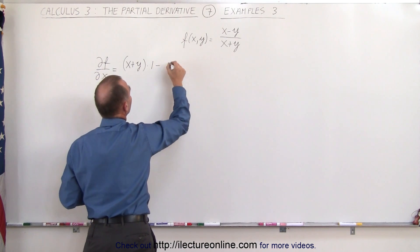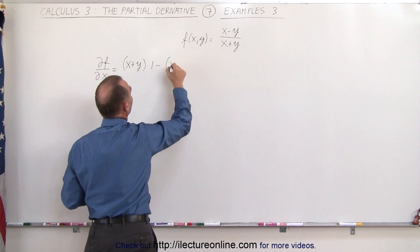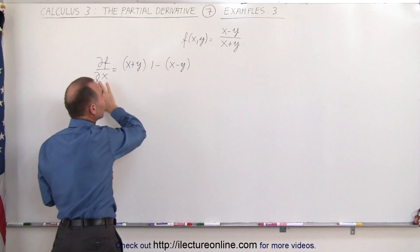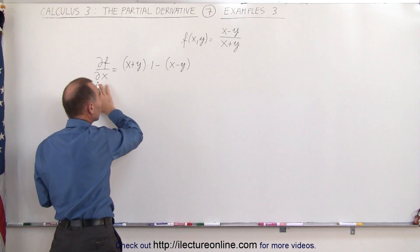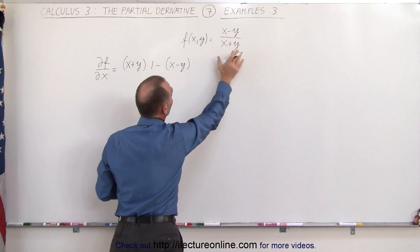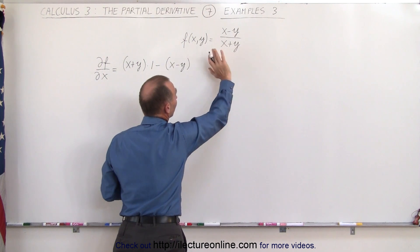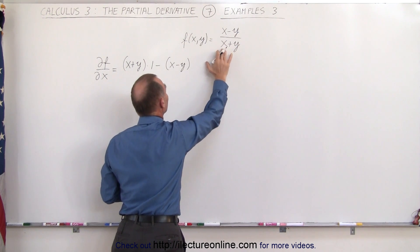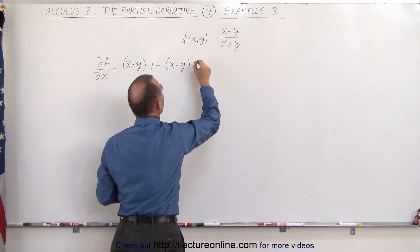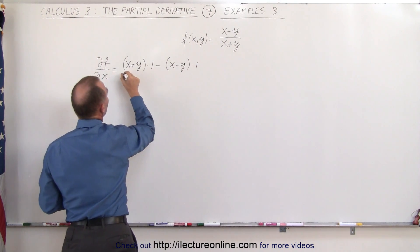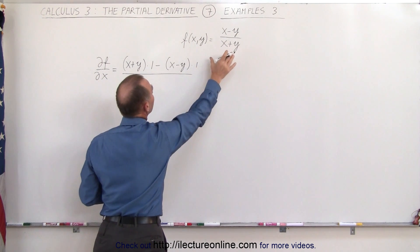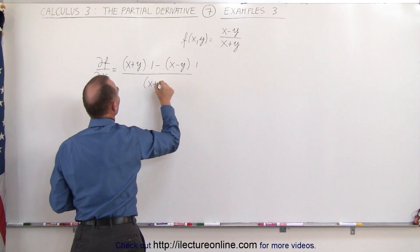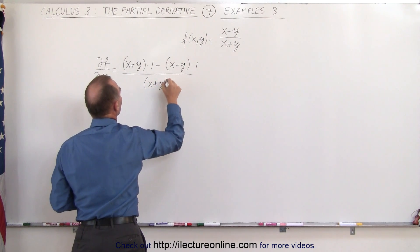Minus the numerator, which is x minus y, times the derivative of the denominator with respect to x only. Since it's a partial derivative, the plus y becomes a constant, the derivative of the constant is 0, and the partial derivative of x with respect to x is equal to 1. Then we divide that by the denominator squared — the quantity x plus y squared.